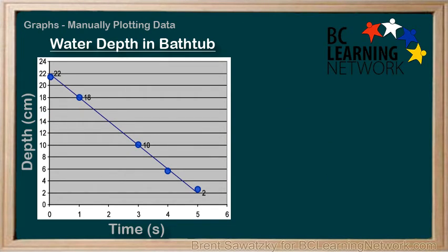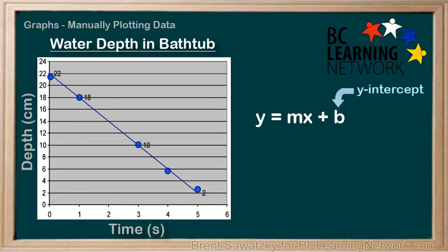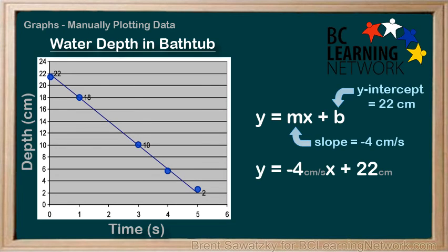At this point, we know all the information required to make an equation describing this situation. It's clearly linear, so let's start with y equals mx plus b. Recall that b is the y-intercept, which we know to be 22 centimeters, and m, the slope, was found to be negative 4 centimeters per second. To give the equation more meaning, let's replace y and x with d for depth and t for time. Our improved equation is: d equals negative 4 centimeters per second times t plus 22 centimeters, where d is the tub depth in centimeters and t is the time in seconds.